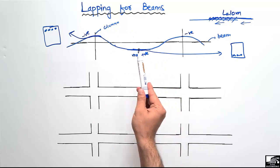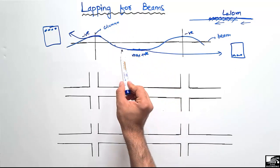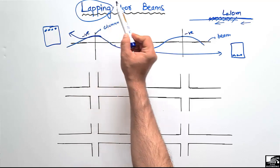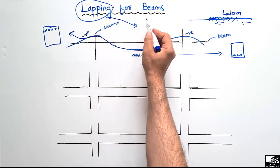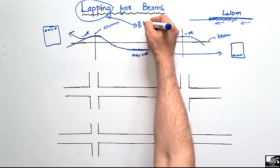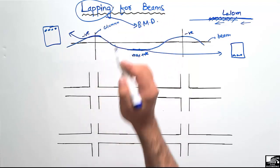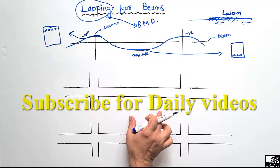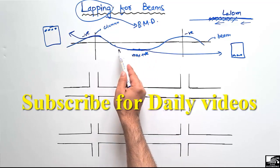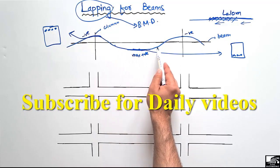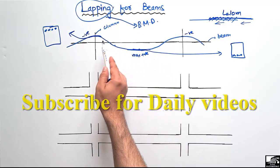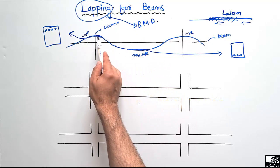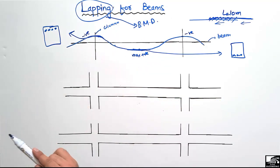At the column sections we provide reinforcement at the top of the beam, because there is maximum bending moment at the top portion. So, reinforcement placement is based on the bending moment diagram. Lapping of bars is strongly dependent on the bending moment diagram. The maximum positive bending moment is at the mid portion and negative bending moment is at the column-beam sections.